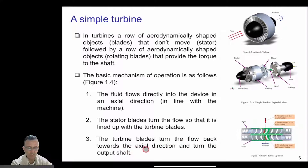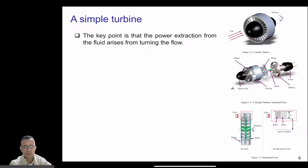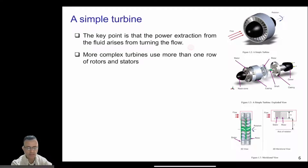The rotor blades turn the flow back toward the axial direction and turn the output shaft, from which we can get the power and torque. The key point is that power extraction from the fluid arises from turning the flow. More complex turbines use more than one row of rotor and stator.